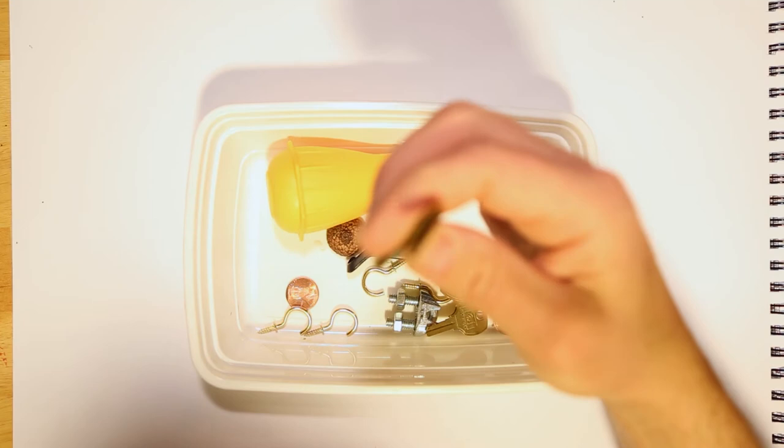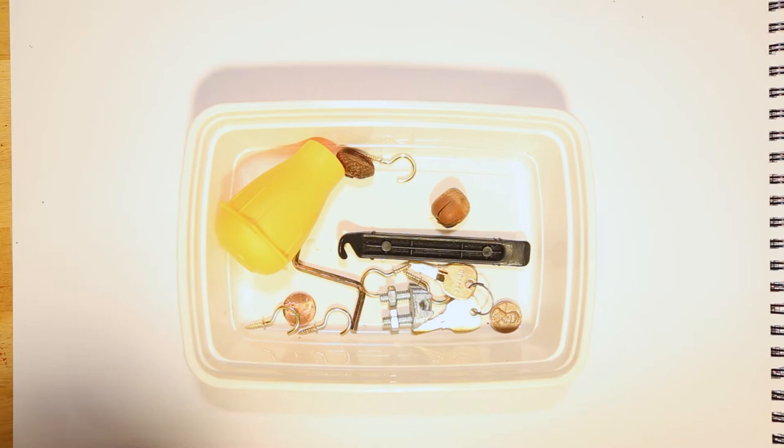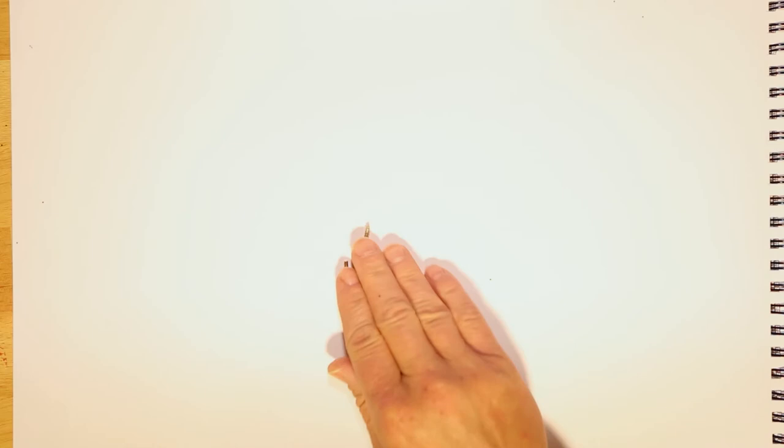Little hex key, allen key, turkey baster, acorn outside, acorn caps. These are super useful, so hopefully you guys found a few fun things to use as springboards to kind of start your drawings.